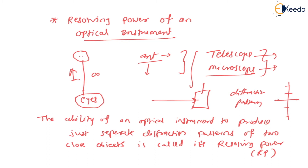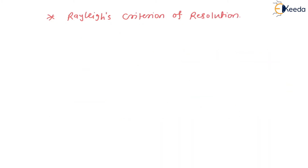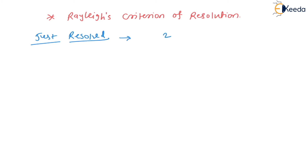Now we'll see what is Rayleigh's criterion for resolution. In your university exam, most times they ask: what is Rayleigh's criterion for resolution? It's a simple two-mark question. When we want to see two close objects distinctly or separately we use an optical instrument, and we know what resolving power is. So when we say that two objects are just resolved, the condition for this has been given by Rayleigh. Since there are two objects, we get two diffraction patterns.